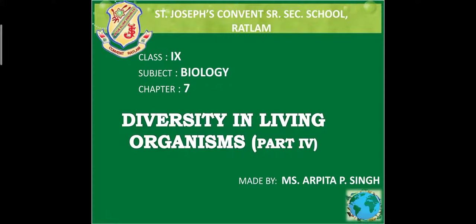Hello students, I am back with my fourth part of diversity in living organisms from Biology Class 9. In my previous third slide, I explained about the kingdom Animalia, including Porifera, Coelenterata, Platyhelminthes, Nematoda, Annelids, Arthropoda, Mollusca, Echinodermata and Protochordata.